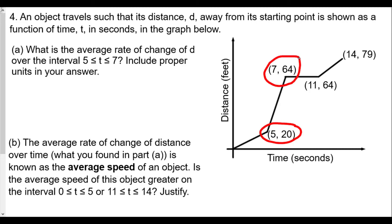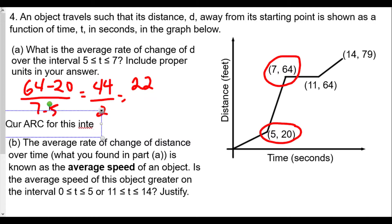So our average rate of change would be 64 minus 20 over 7 minus 5. So 64 minus 20 is 44. And 7 minus 5 is 2, giving us 22. Now, what will be our average rate of change? Our average rate of change, I'll call ARC for this interval.